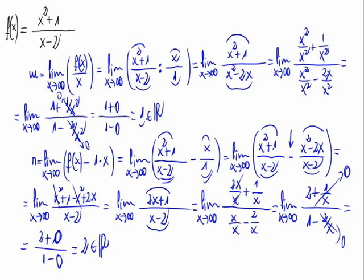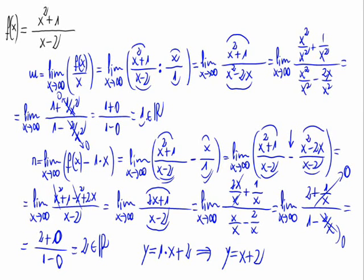2 is also a real number. As m and n are both real numbers, we have found an oblique asymptote. This asymptote would be y equals m, that is 1, times x plus n, that is 2. The asymptote is y equals x plus 2.